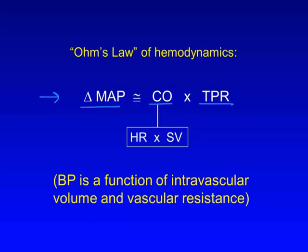Cardiac output, in turn, is the product of heart rate and stroke volume, and stroke volume reflects extracellular fluid volume. So when extracellular volume increases, blood pressure tends to increase also. This higher pressure is transmitted throughout the vascular system, and the resulting increase in renal perfusion pressure sets in motion a series of events that helps to restore normal blood pressure and volume.